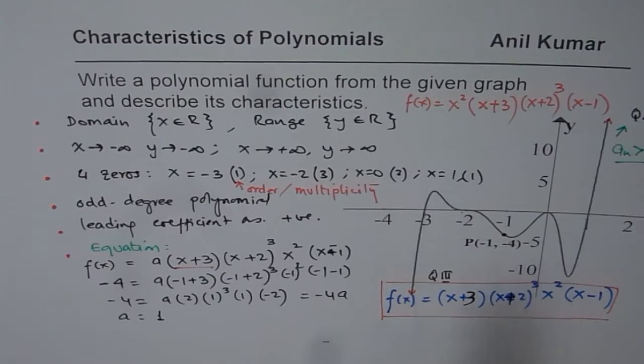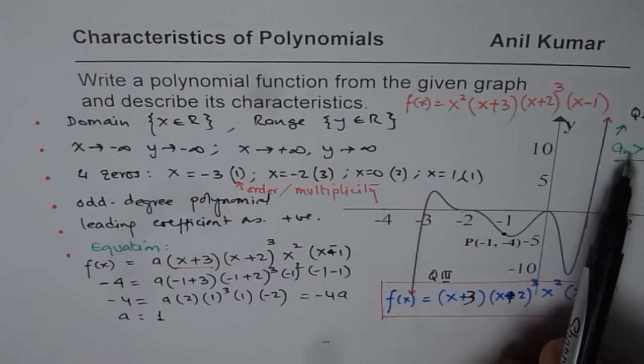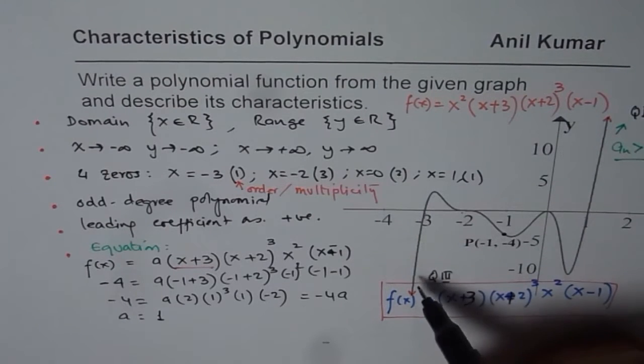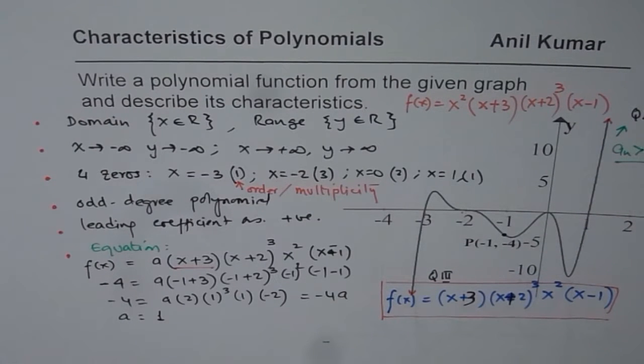We found that a is 1 in this case, and the equation is this. a equals 1 means it is positive, greater than 0. So, right side is up, odd degree function. That is perfect. I hope you understand and appreciate how to get the equation from the given graph, and also, how to write characteristics of a polynomial from the given graph. Thank you, and all the best.